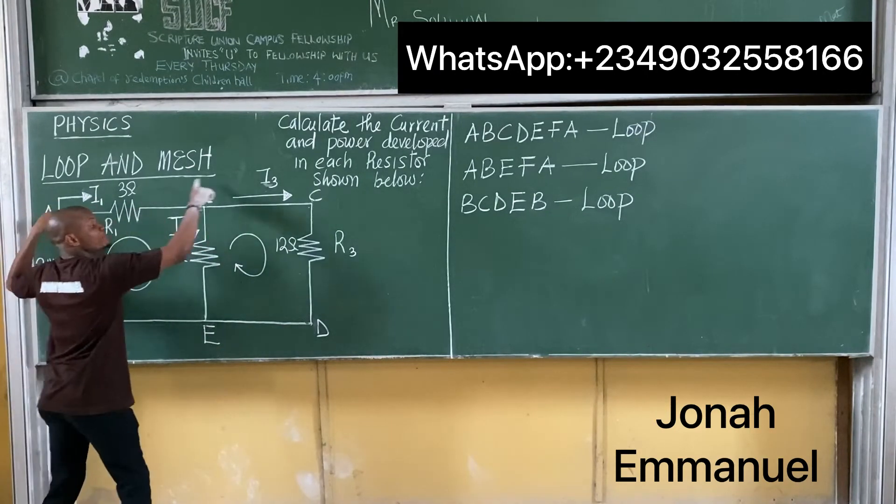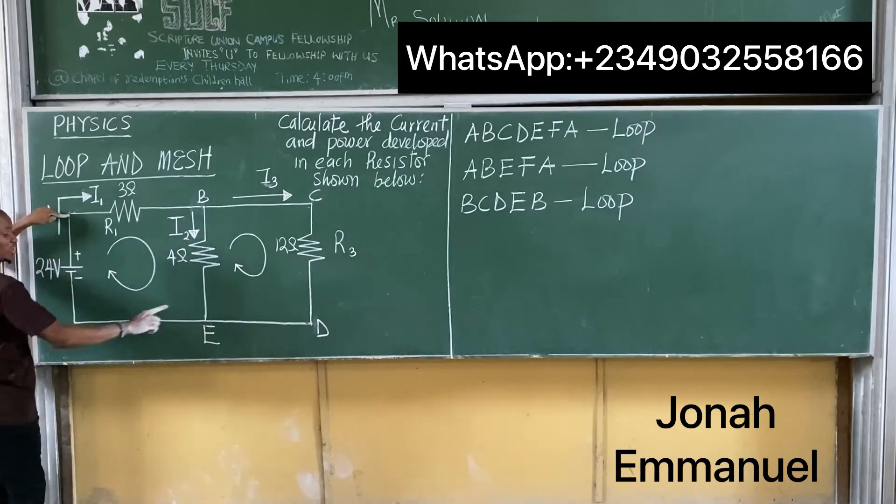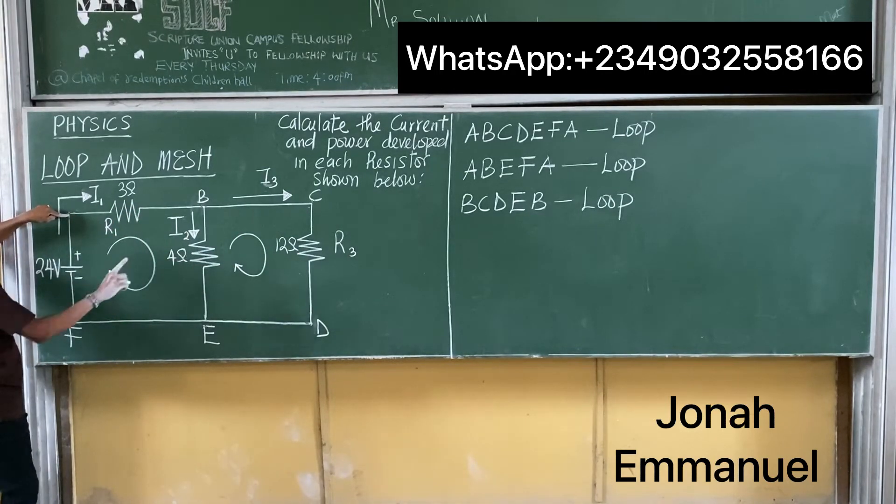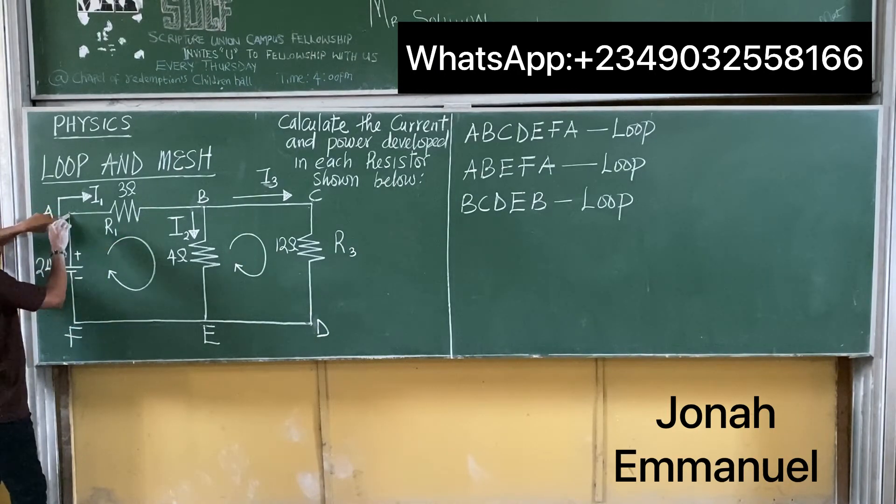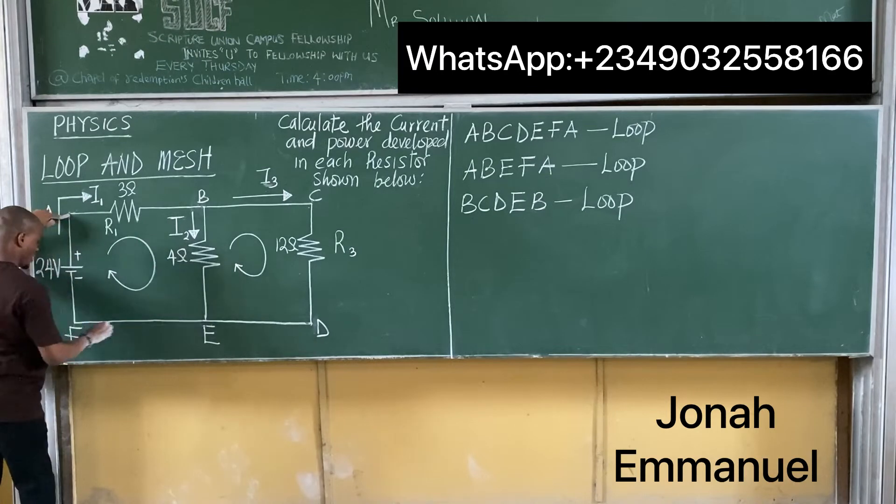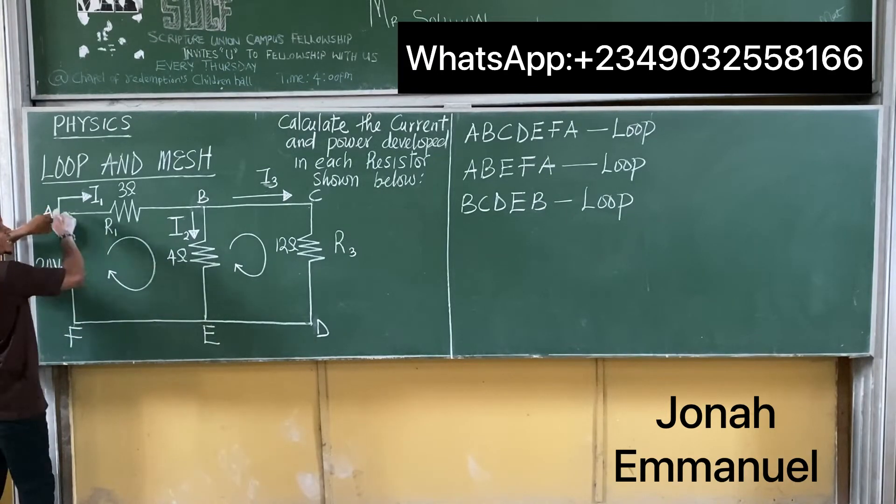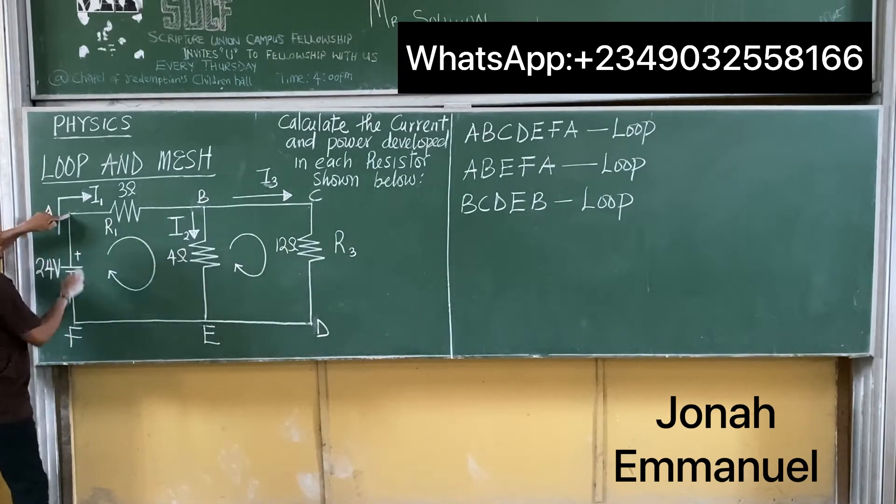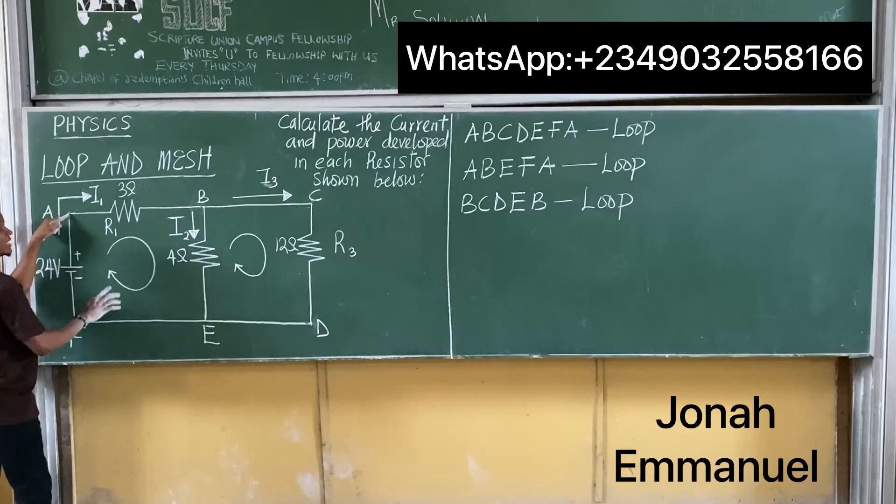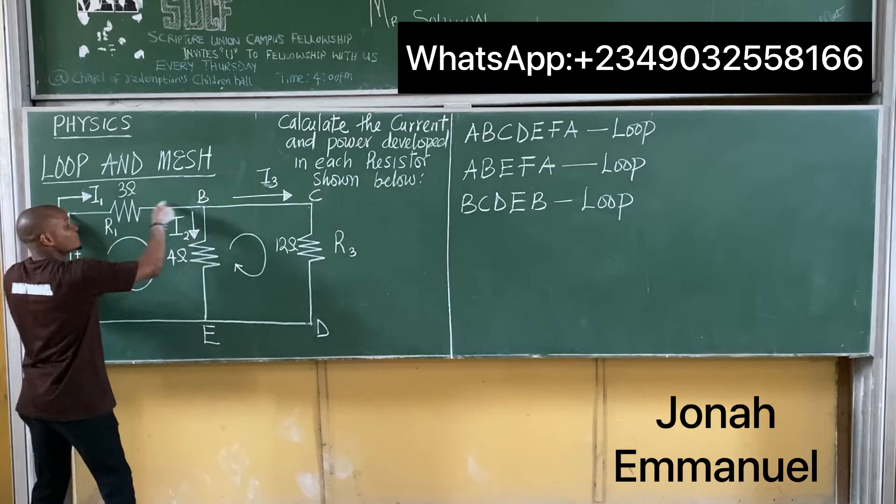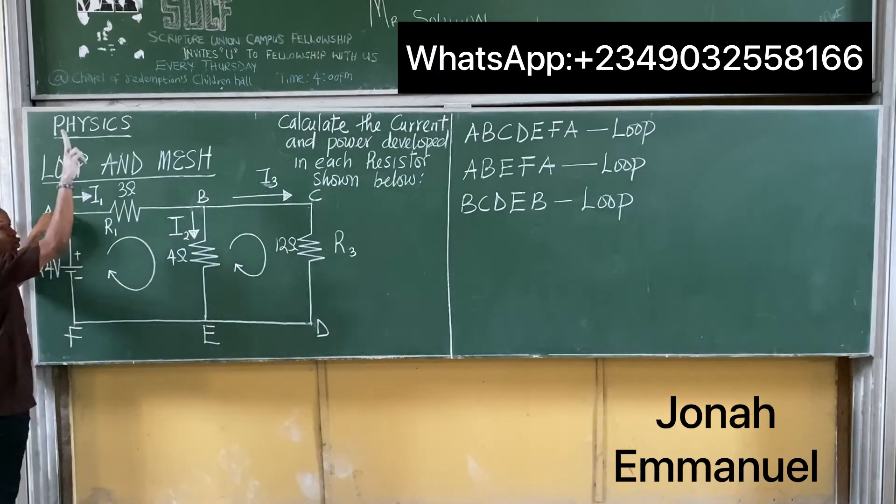But within this big one, which is A, B, C, D, E, F, A, I can still find other smaller loops, such as A, B, E, F, A. So within the A, B, C, D, E, F, A, I can still find a smaller loop. Now address something. This bigger loop contains two other smaller loops.